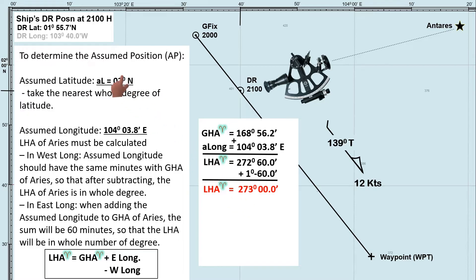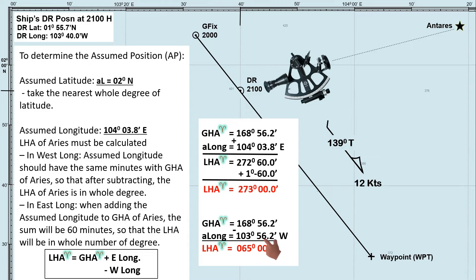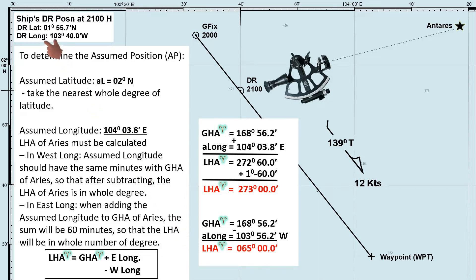But what if our DR longitude is west? Then our assumed longitude is 103 degrees 56.2 minutes, and our LHA is 065 degrees. To find LHA, subtract westerly longitude from GHA. So the minutes of our assumed longitude should be the same as the minutes of our GHA, so that the minutes of LHA will be 0. Always remember that when choosing our assumed longitude, it should be nearest to our DR longitude.